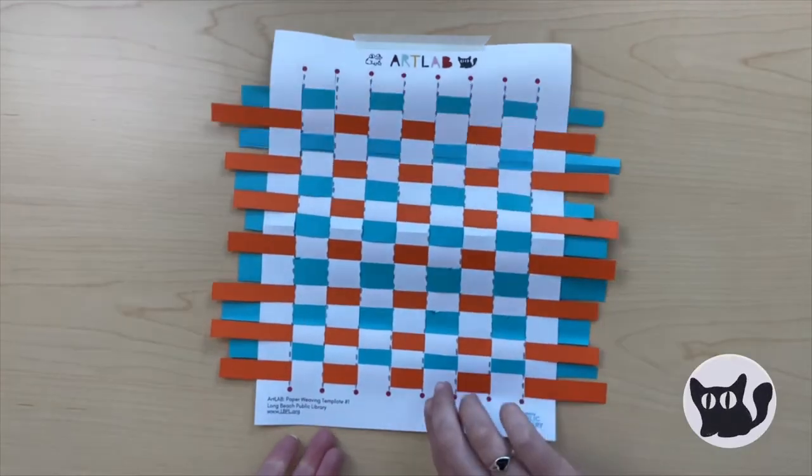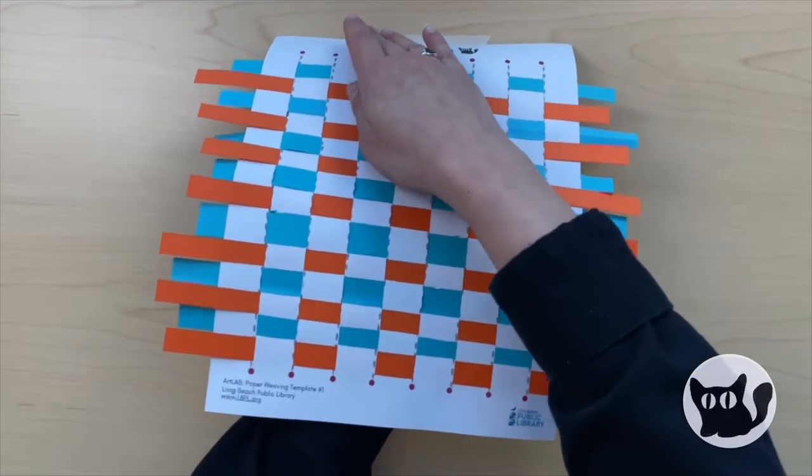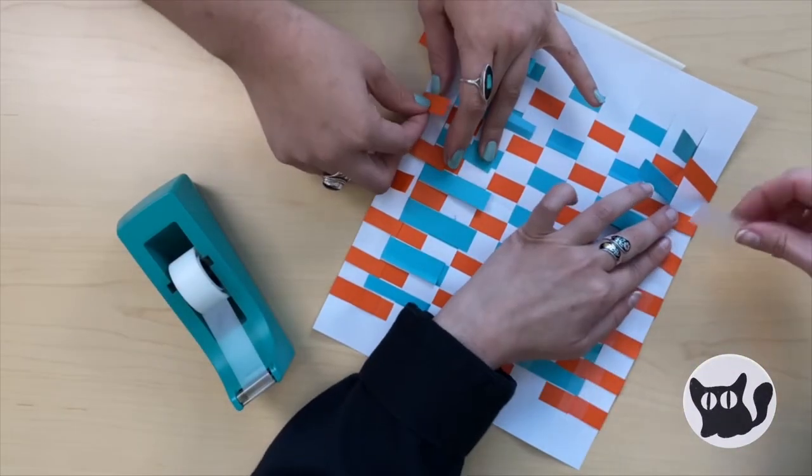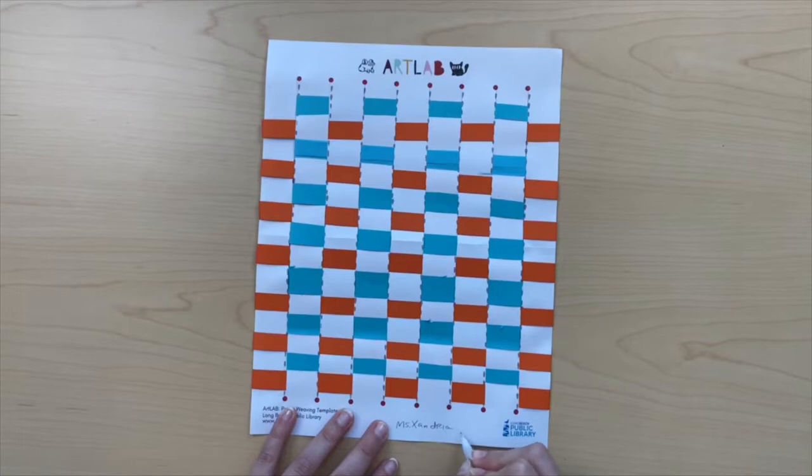Your loom is filled, but we need to take care of the parts hanging off of the edge. Turn your loom over, fold your strips, and glue or tape them down. Don't forget to sign and date your artwork.